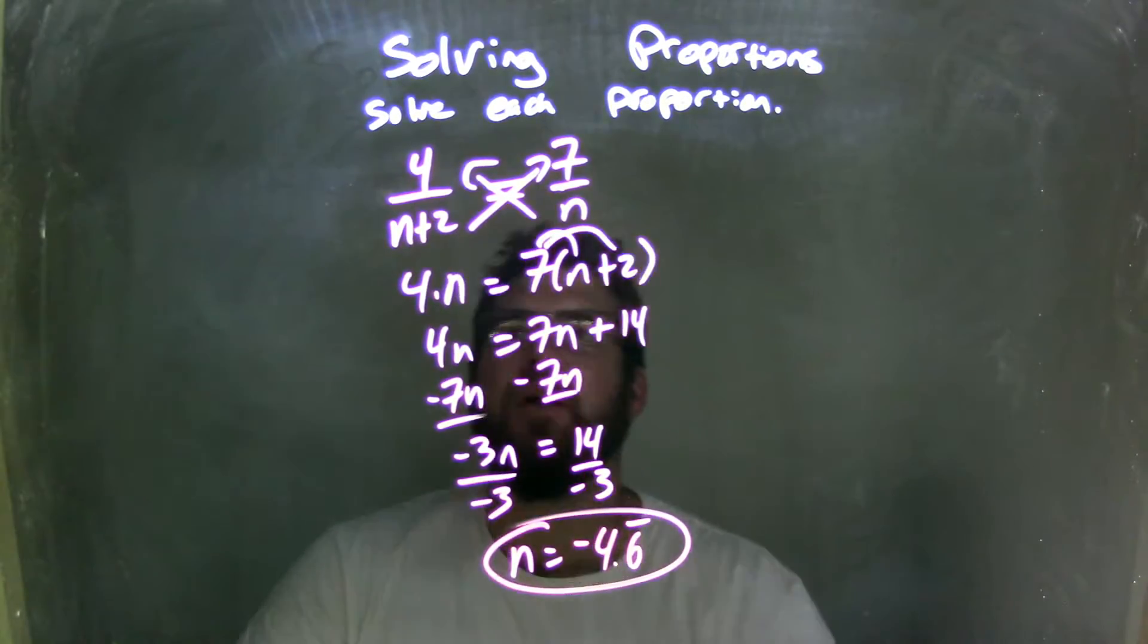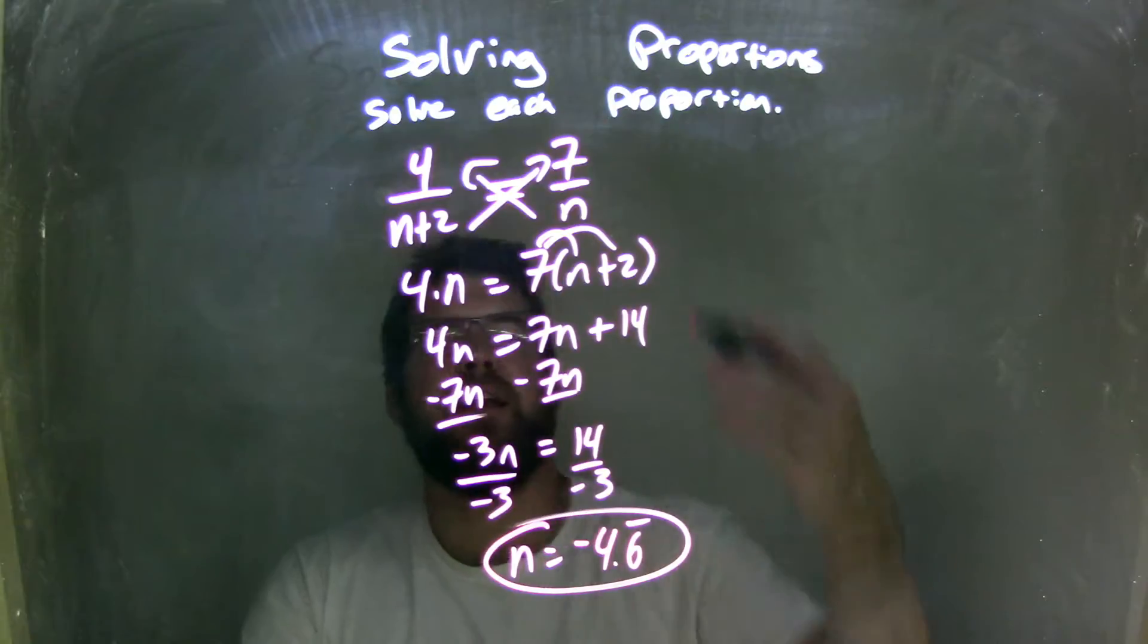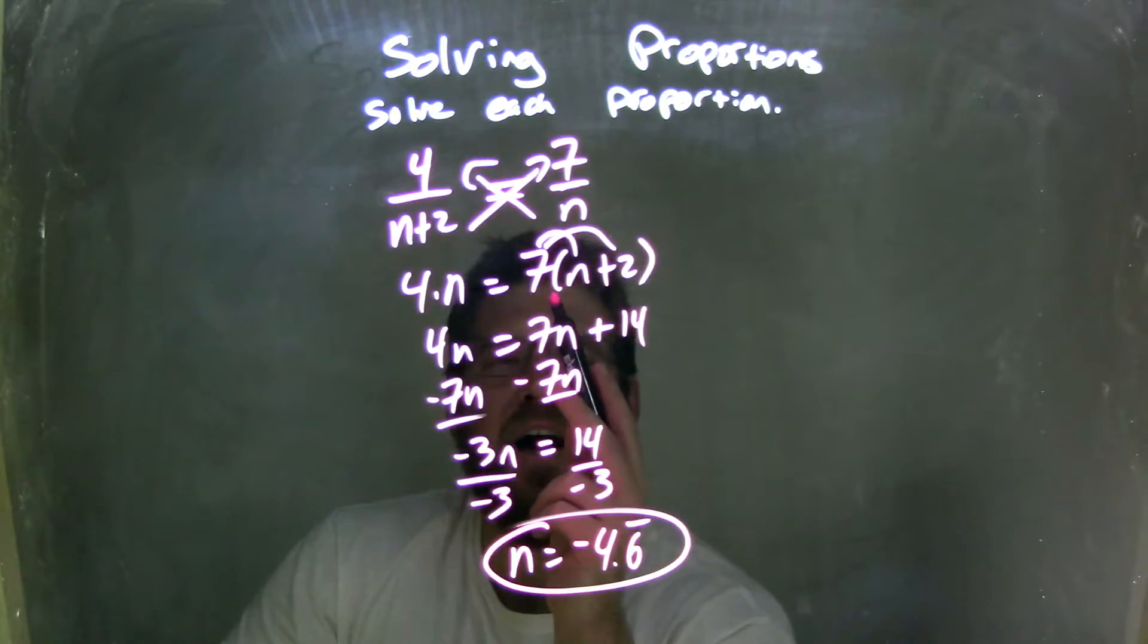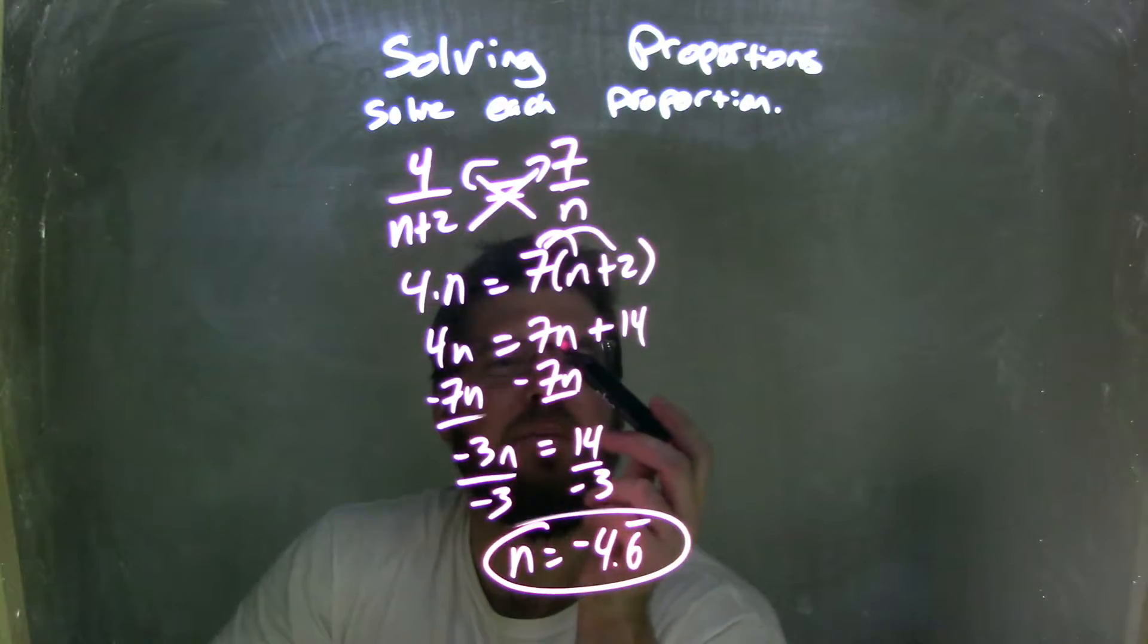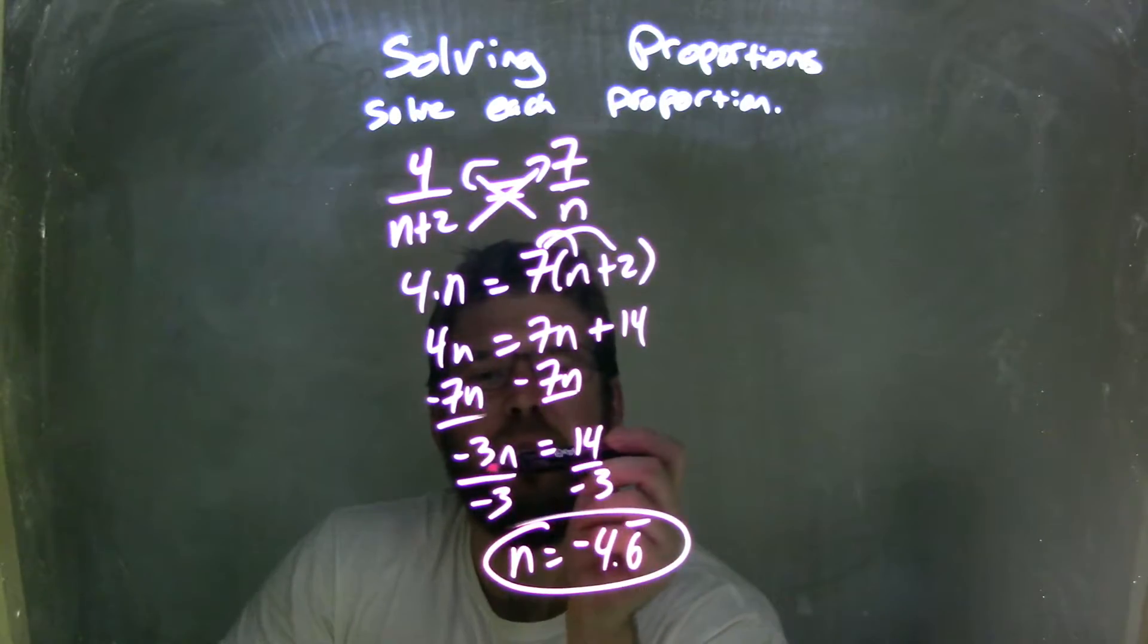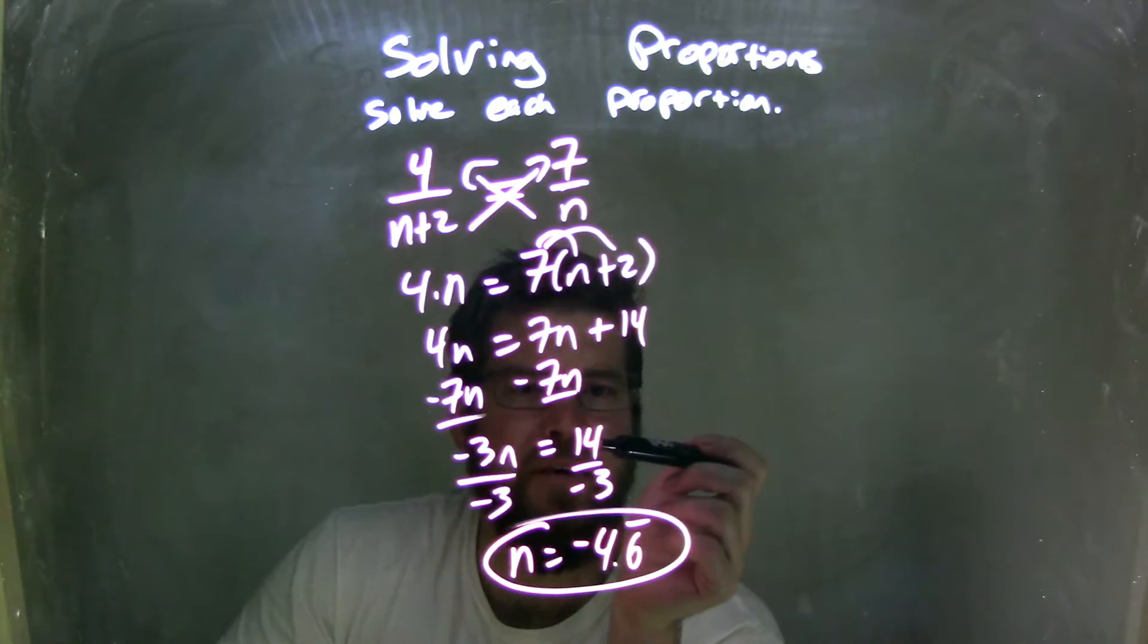Let's recap. We're given 4 over n plus 2 equals 7 over n. I cross-multiply here, giving me 4n on the left, and 7 times parentheses n plus 2 on the right. I distributed the 7 across, giving me 7n plus 14, which is 7 times 2. I subtracted the 7n on both sides, giving me negative 3n equals the 14 right there,